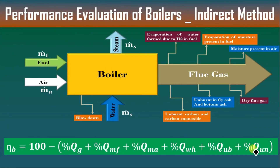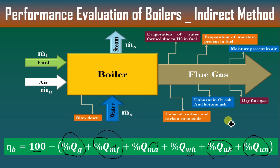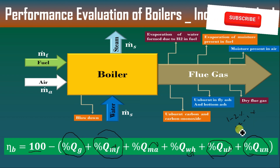Now we will discuss the efficiency of the boiler using the indirect method. Efficiency = 100 − (percentage heat loss due to dry flue gas) − (percentage heat loss due to moisture in fuel) − (percentage heat loss due to moisture in air) − (percentage heat loss due to water formed by hydrogen) − (percentage heat loss due to unburned) − (unaccounted losses). Unaccounted losses are 1–2% for small boilers and 0.2–1% for high-capacity boilers.